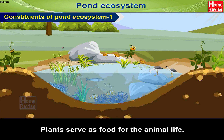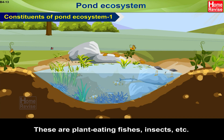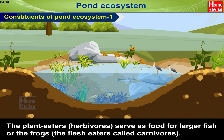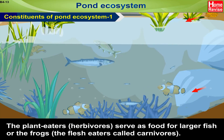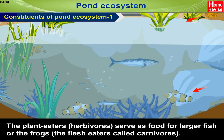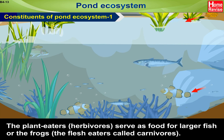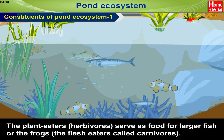Plants serve as food for animal life — plant-eating fishes, insects, etc. The plant-eaters, i.e. herbivores, serve as food for larger fish or frogs, i.e. the flesh-eaters called carnivores.